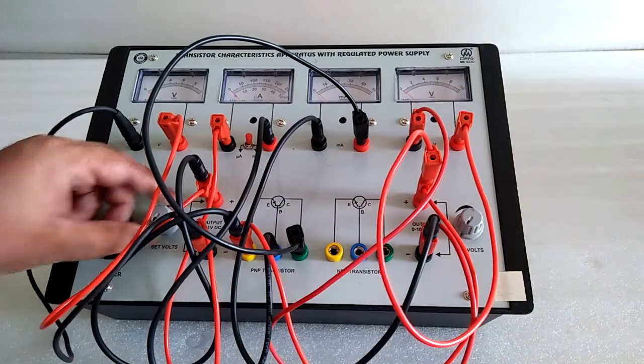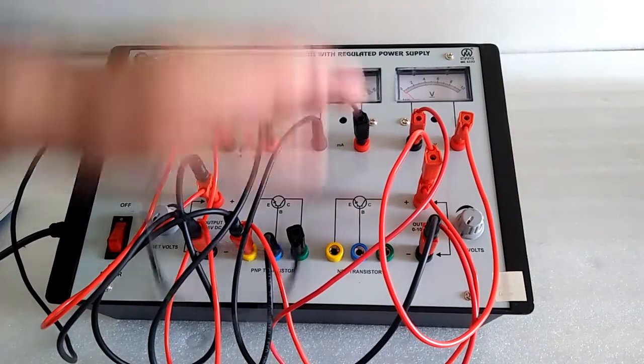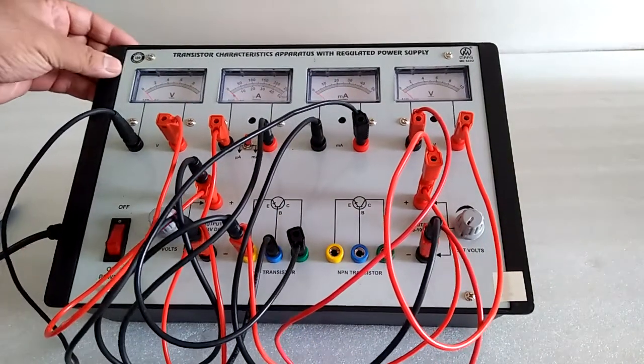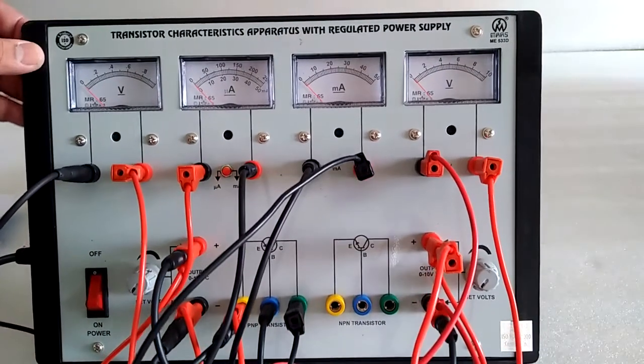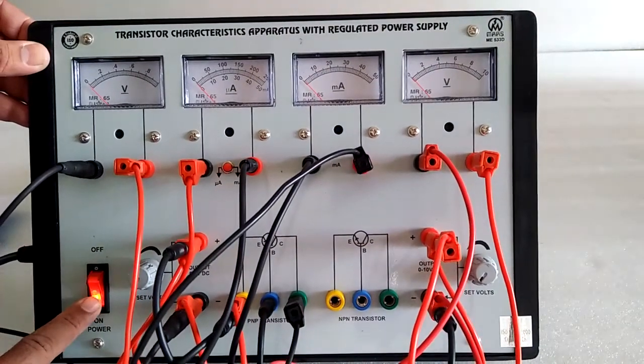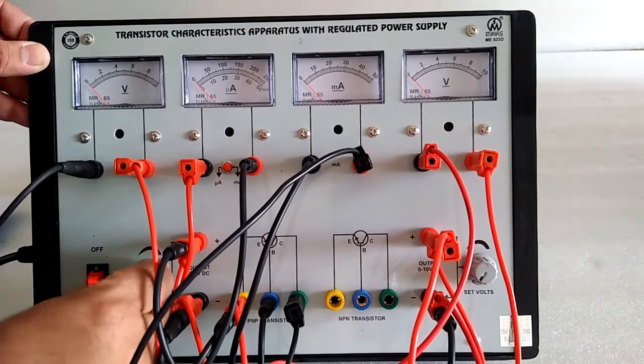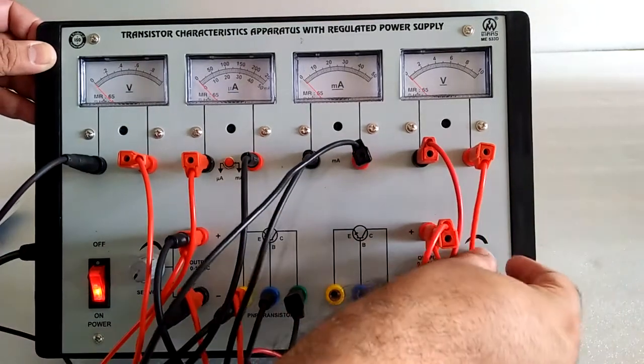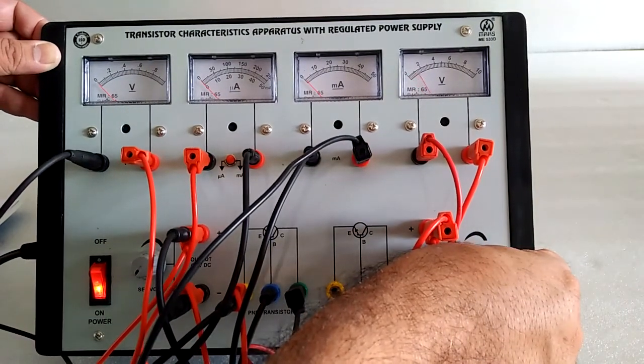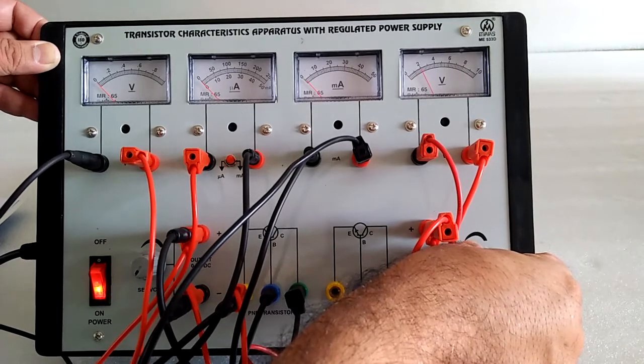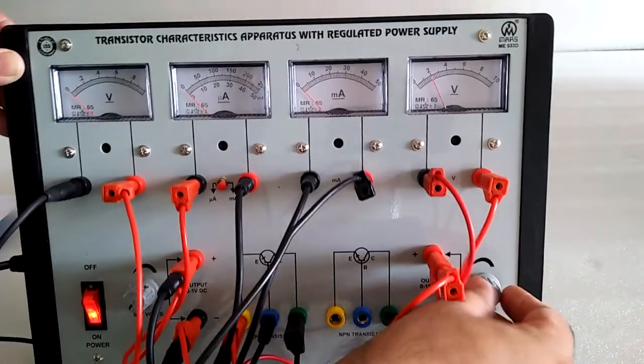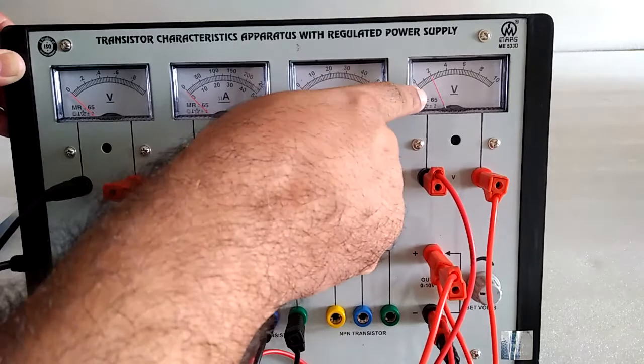Turn the potentiometer at minimum position. Switch on the supply. This is the minimum position. Now set the VC at suppose 2 volts. Here we have 2 volts.